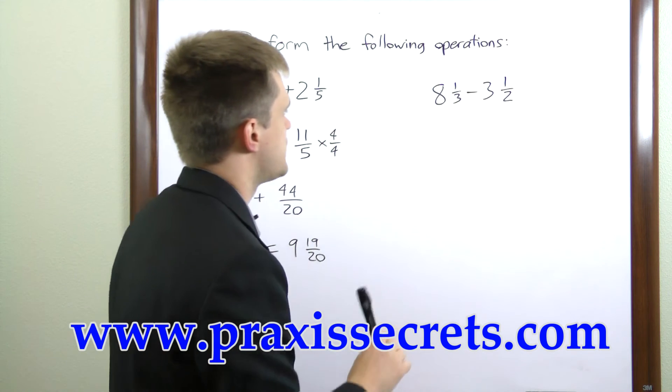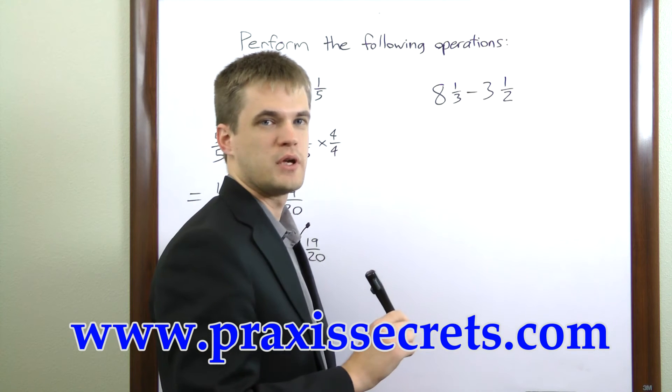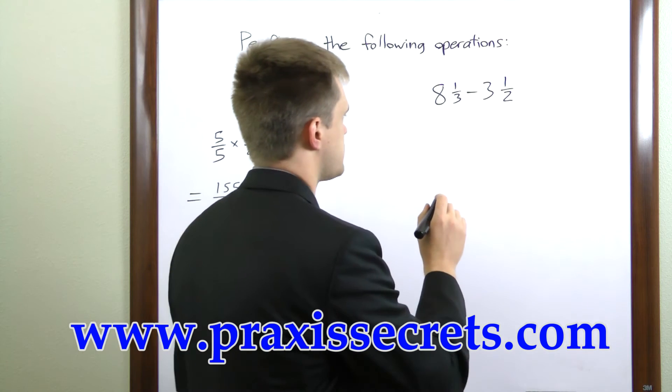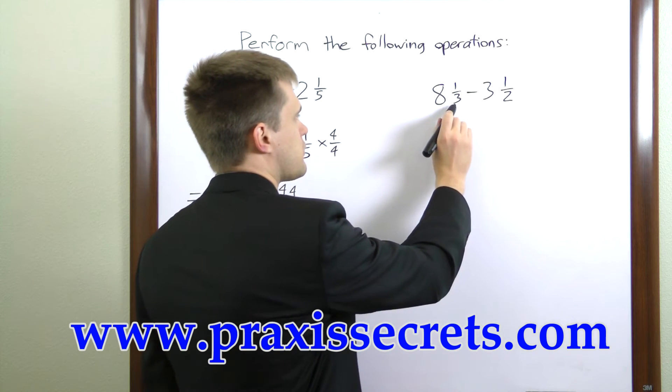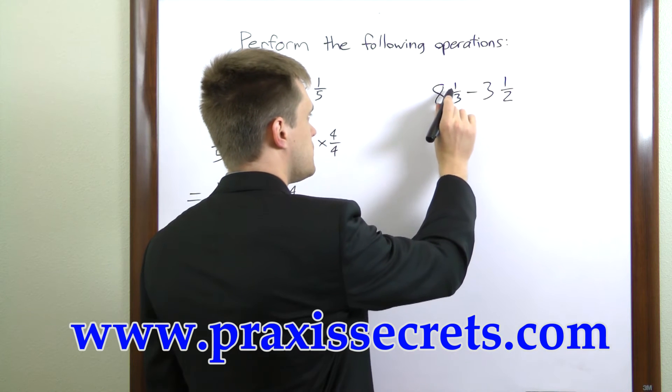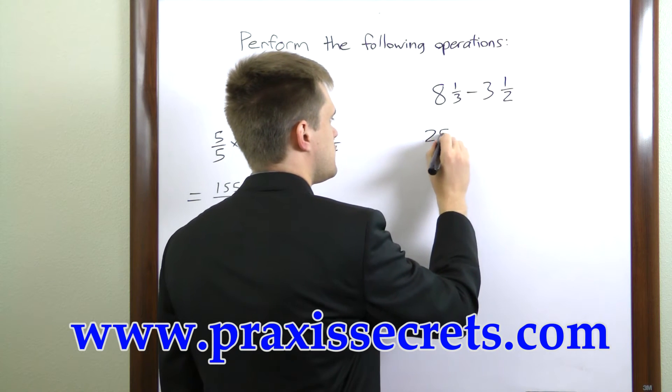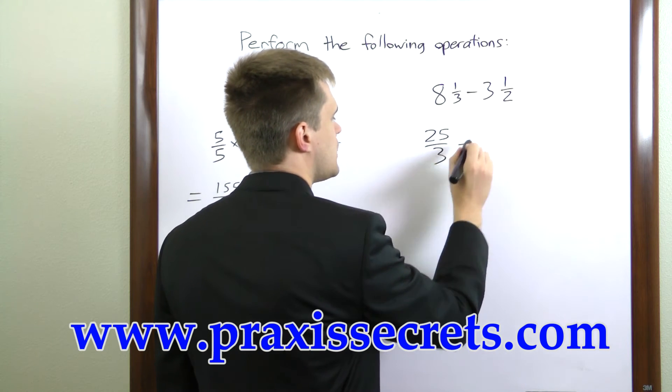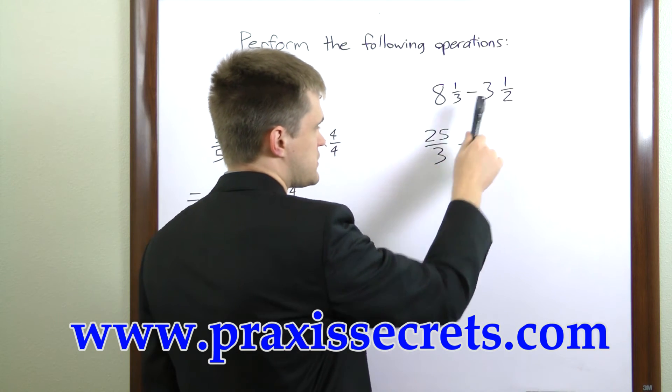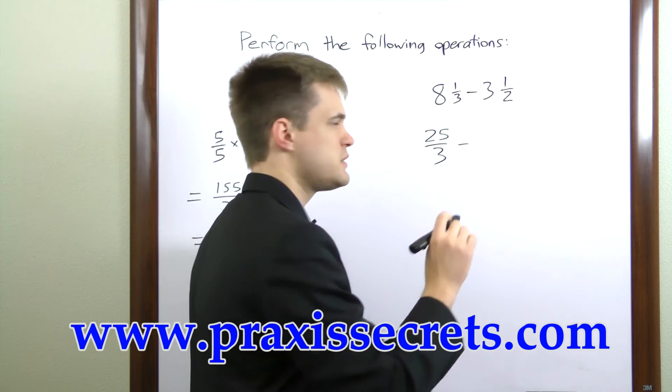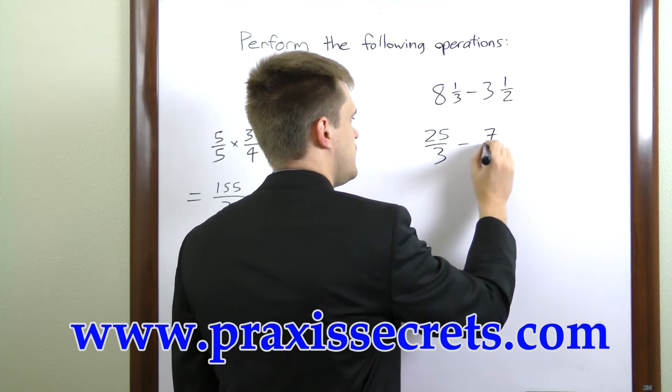In the second example we have 8 and 1 third minus 3 and 1 half. So we'll solve it the same way. 3 times 8 is 24 plus 1 is 25, 25 over 3 minus 2 times 3 is 6 plus 1 is 7, 7 over 2.